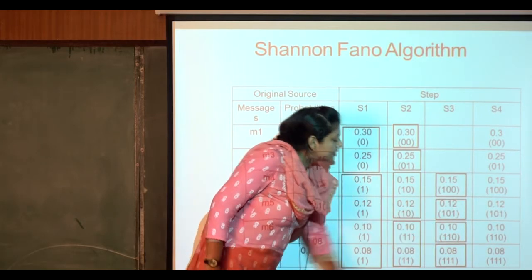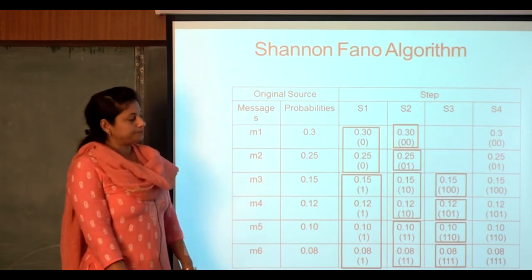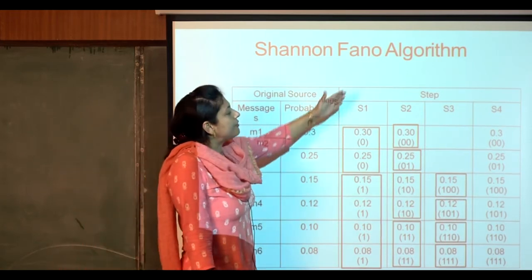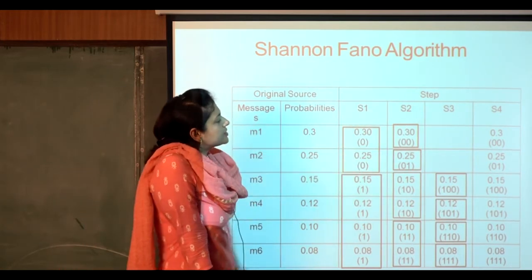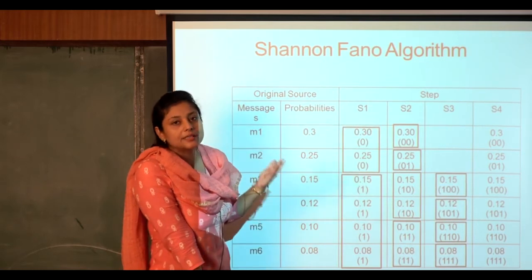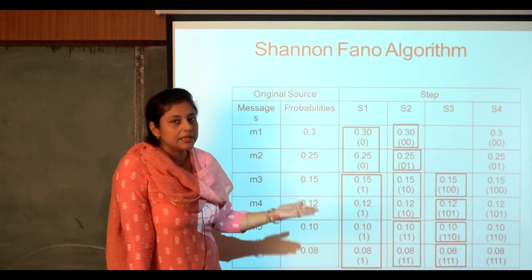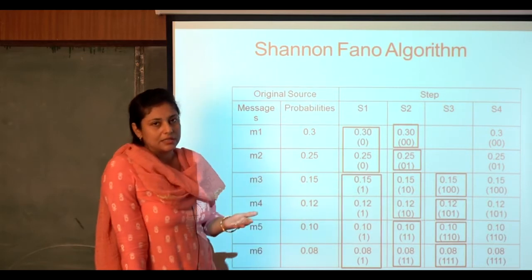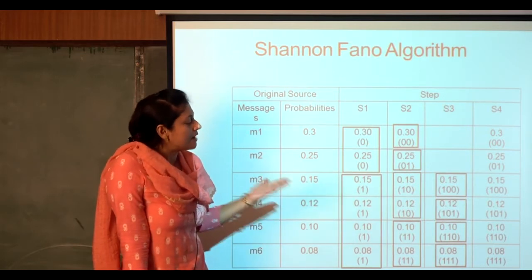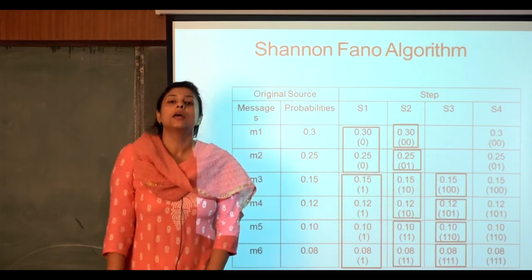Ultimately, in the S4 reduced state, 0.3 has been encoded as 00, 0.25 as 01, 0.15 as 100, 0.12 as 101, 0.10 as 110, and 0.08 as 111.